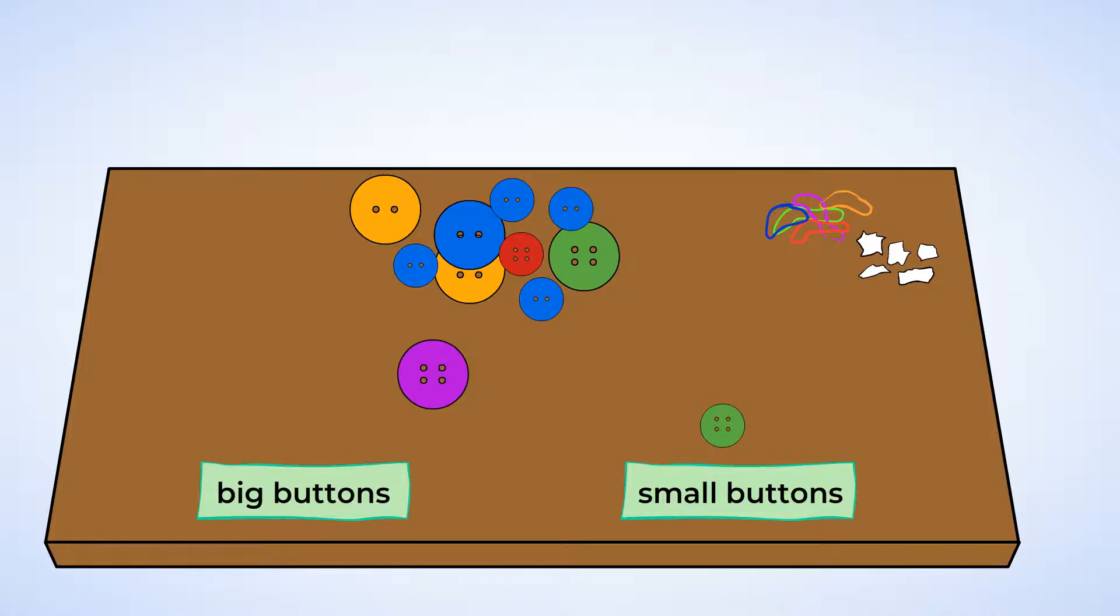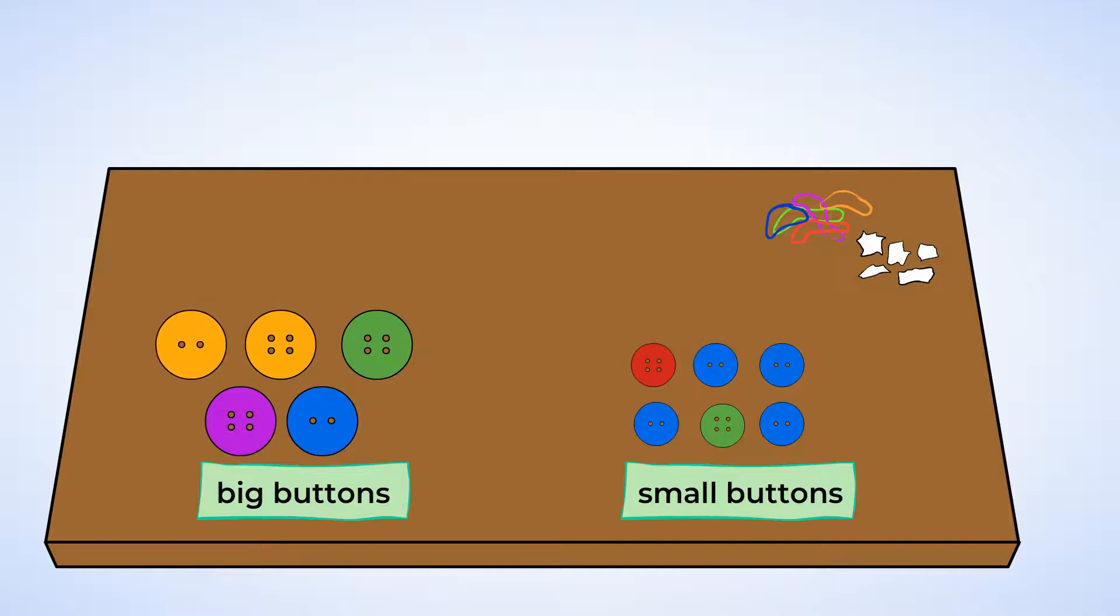And let's look at the next button. This button is also small. And how about this button? Oh, this one's much bigger. This button can go over here. It's a big button. All right, let's keep going. Okay, now we have our two piles. Small buttons and big buttons.